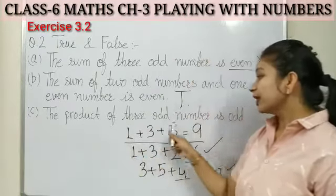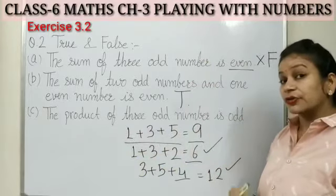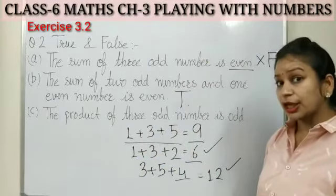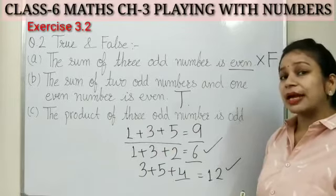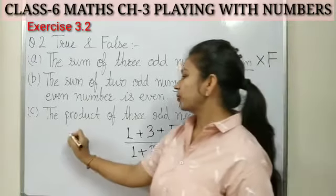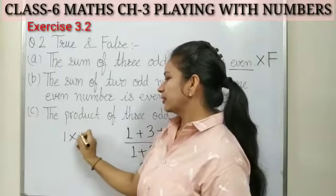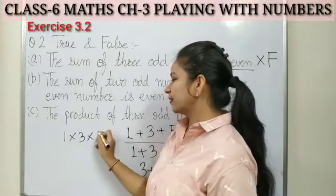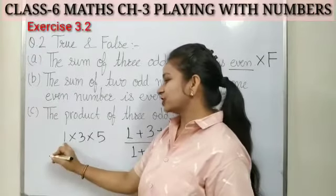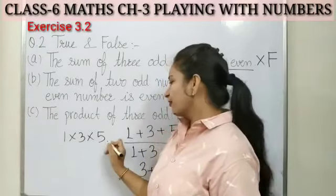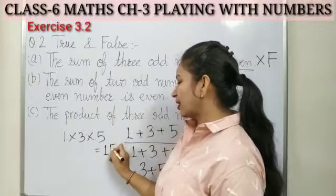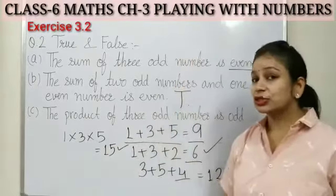Next, statement C: the product of three odd numbers is odd. When we multiply three odd numbers, their product will also be an odd number. For example, take one, three, five — three odd numbers. One times three is three, and three times five is fifteen. Fifteen is an odd number, so this statement is true.